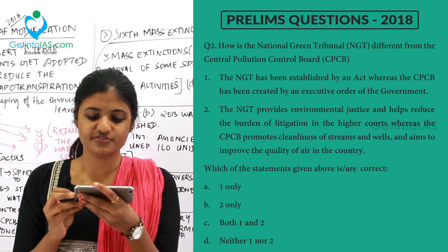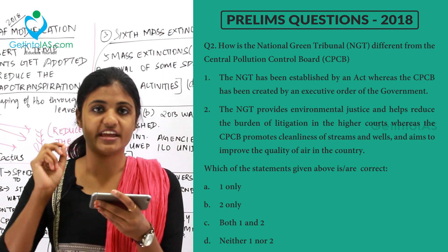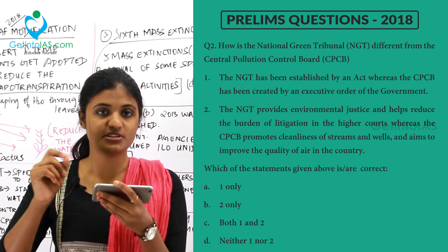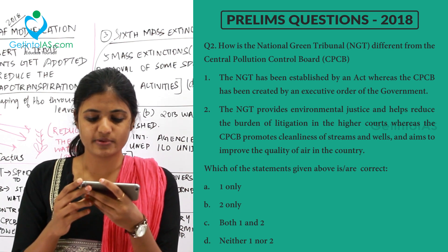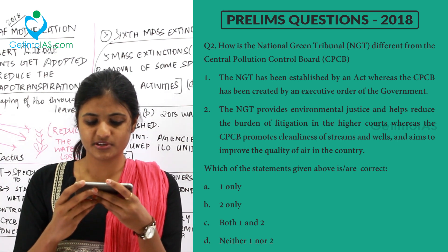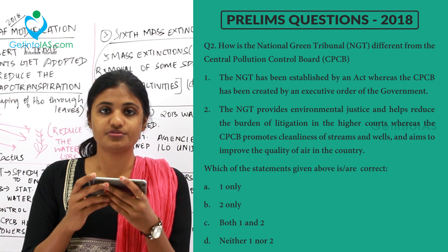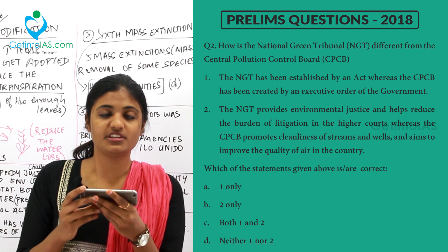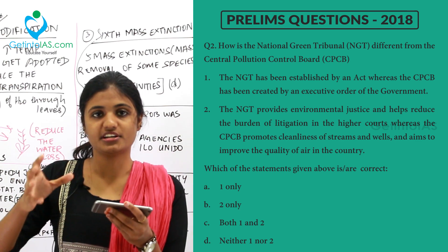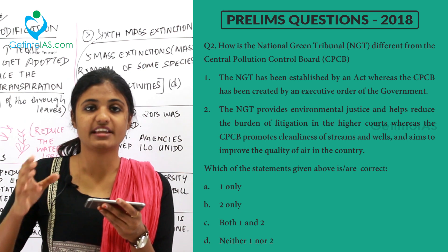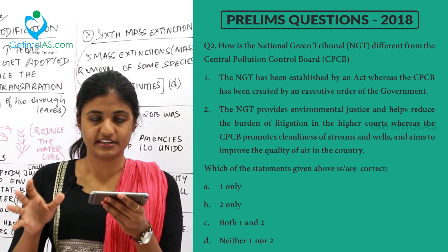Moving to the next question: how is the National Green Tribunal (NGT) different from the Central Pollution Control Board (CPCB)? The first statement says the NGT has been established by an act whereas the CPCB has been created by an executive order of the government. The NGT was indeed brought under an act — the National Green Tribunal Act of 2010 — so that part is correct.